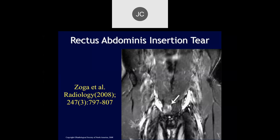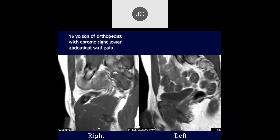Pointing at the rectus abdominis — you can see a lot of edema here. Here are the neurovascular bundles on either side.